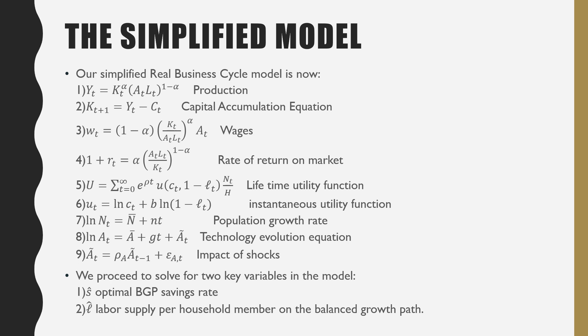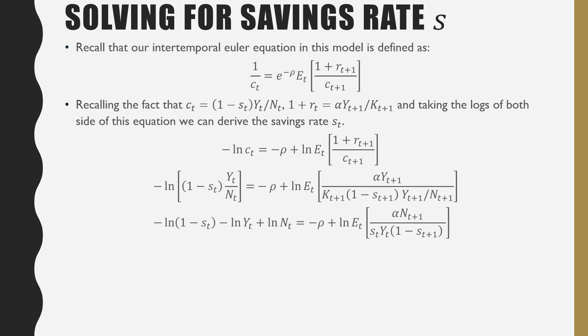We proceed to solve for two key variables in this model. That is the optimal BGP savings rate, which is denoted as S hat and our labor supply per household member on the balanced growth path, which is denoted by L hat over here, which is our labor supply per household member. So to solve for our savings rate S hat, recall that our inter-temporal Euler equation is defined as the following.